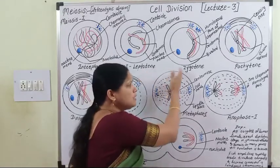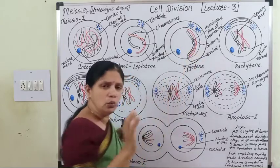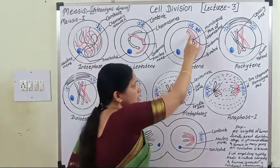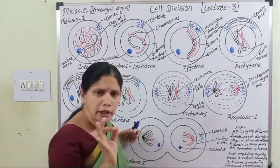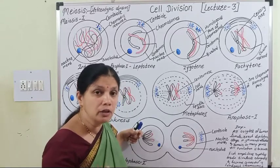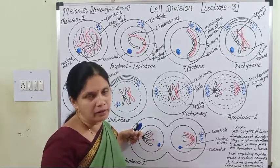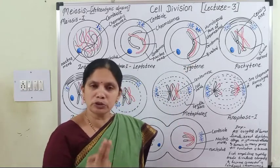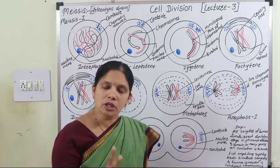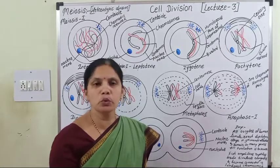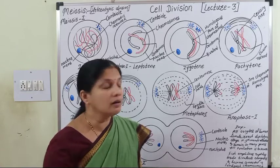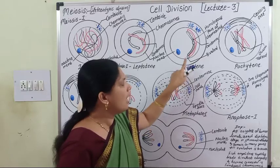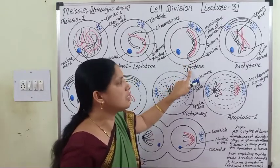In both leptotene and zygotene stages, the nuclear membrane and nucleolus are still distinctly present. Also in zygotene, each chromosome has two sister chromatids, but they are not clearly observed at this stage.